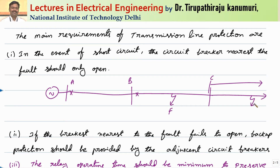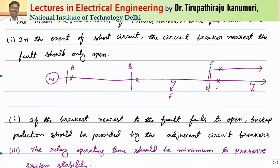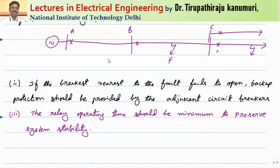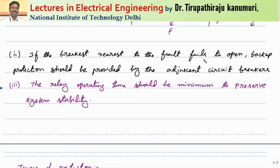If the circuit breaker at B does not operate, then only as backup should the circuit breaker at point A operate. Similarly, if the fault happens at another point, the nearest circuit breaker should operate first; if that does not operate, the circuit breaker at point B should operate; and only if that also fails should A operate. This ensures only a small part of the system is disconnected without affecting system stability. Backup protection is always required.